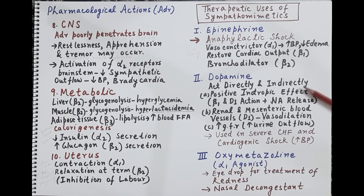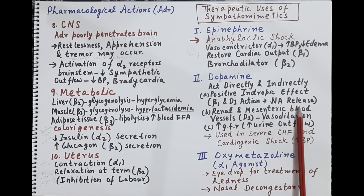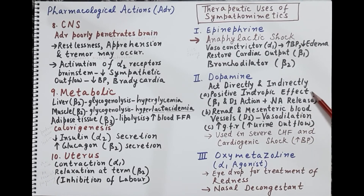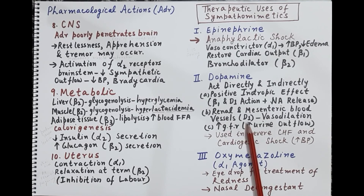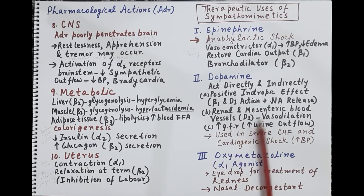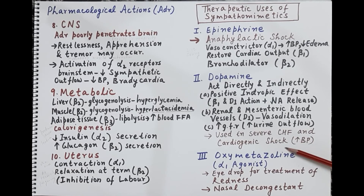Another important sympathomimetic is dopamine. Dopamine acts both directly and indirectly. It produces a positive inotropic effect — increasing the force of cardiac muscle contraction — by stimulating beta 1 receptors, dopamine D1 receptors, and by stimulating the release of noradrenaline. This increases blood pressure. Dopamine also dilates renal and mesenteric blood vessels via dopamine D1 receptor stimulation, increasing glomerular filtration rate and urine output. Therefore it is useful in treatment of severe congestive heart failure and cardiogenic shock.